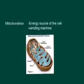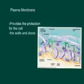The mitochondrion is the energy source of the cell, and that is the vending machine, which provides us with drinks and snacks inside the locker room. Then you have the plasma membrane — it provides protection for the cell, and that is the walls and doors that pretty much cover the entire locker room.